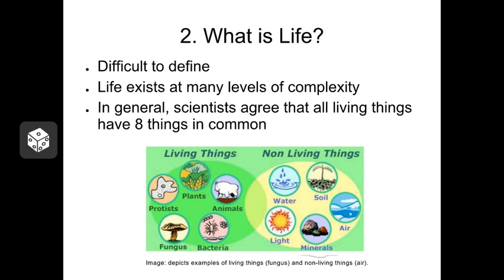If it doesn't have all eight characteristics, then we put it in the non-living things category. And yes, there are some interesting things out in nature that are kind of on the border between those two categories, such as viruses and prions.